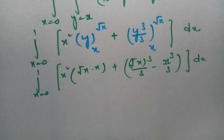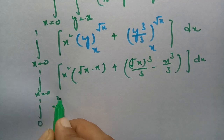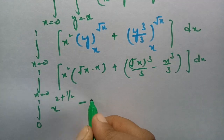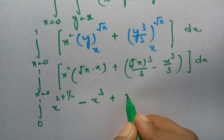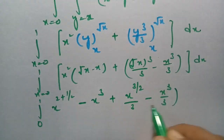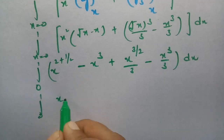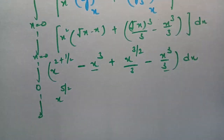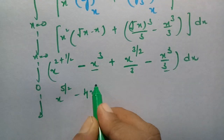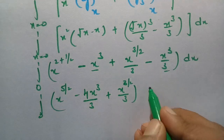Now I have to multiply each and every term. With x limits from 0 to 1, multiplying x square into root x minus x gives x square times root x, which is x to the power 5 by 2, minus x cube. For the second part, root x whole cube by 3 is x to the power 3 by 2 by 3, minus x cube by 3. Combining like terms with LCM 3 gives minus 4 x cube by 3 plus x to the power 3 by 2 by 3, of dx.